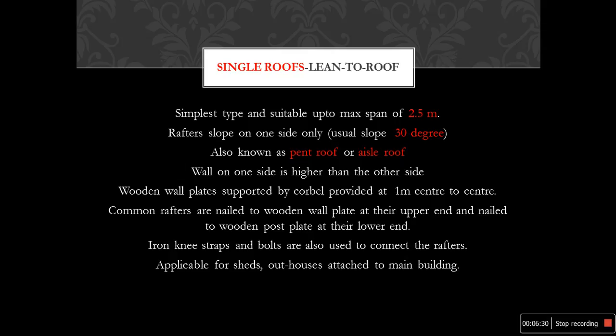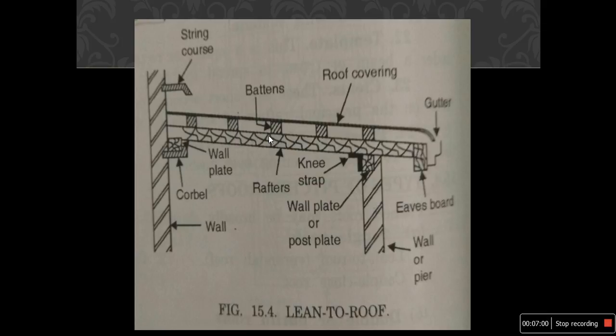In a lean-to roof, one wall is higher than the other. Wooden wall plates are provided at one meter center to center. Common rafters are nailed to wooden wall plates at their upper end and nailed to the wooden wall plate at their lower end. This is applicable for sheds and outhouses attached to the main building. The elements include battens, roof covering, gutter, wall plate, cobble (connected from the wall supporting the eave boards), rafters, knee strap, wall plate or post plate, and the wall.